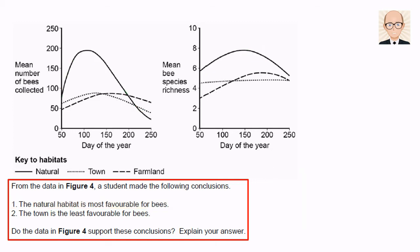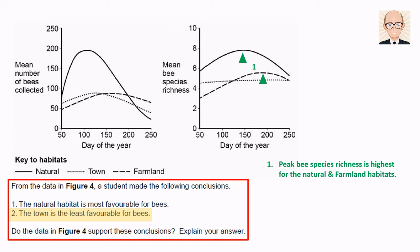Let's look now at the next conclusion, that the town is the least favourable habitat for bees. Again, there's evidence to support this conclusion, and there's evidence to go against it. The maximum values for species richness in the farmland and for the natural habitats are both higher than anything the town habitat has to offer. Also, the mean species richness in the towns is the lowest out of the three habitats from day 125 onwards.